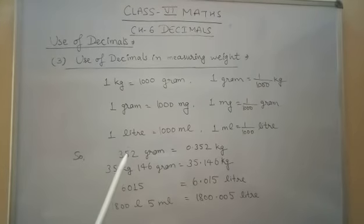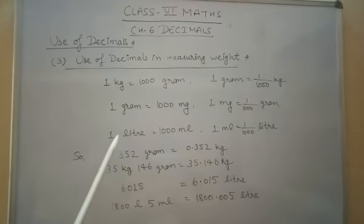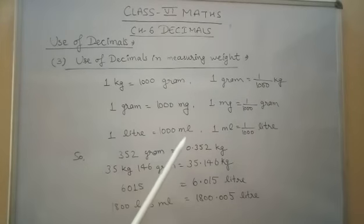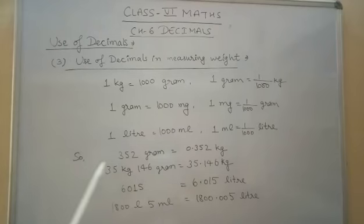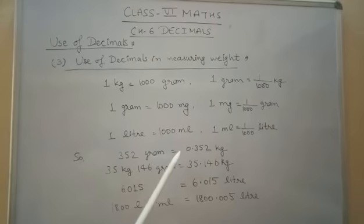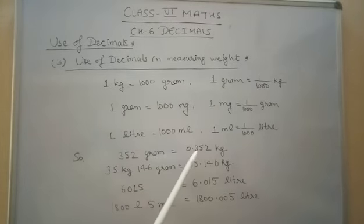And 1 liter, if we measure capacity, 1 liter is equal to 1000 ml, then reverse is 1 ml is equal to 1 upon 1000 liter. So 352 gram, we can write 0.352 kg.